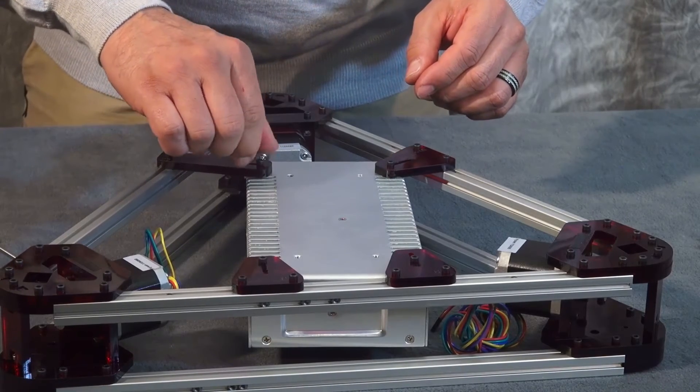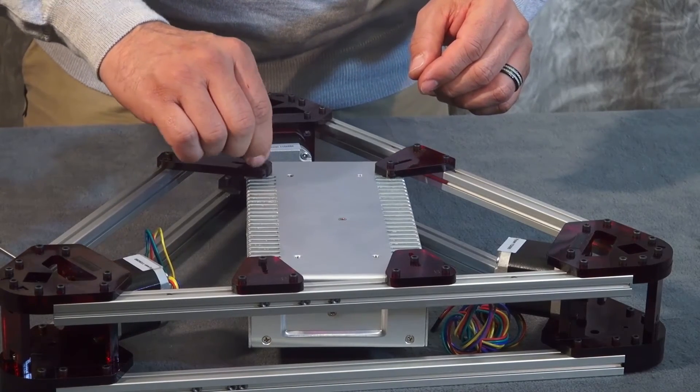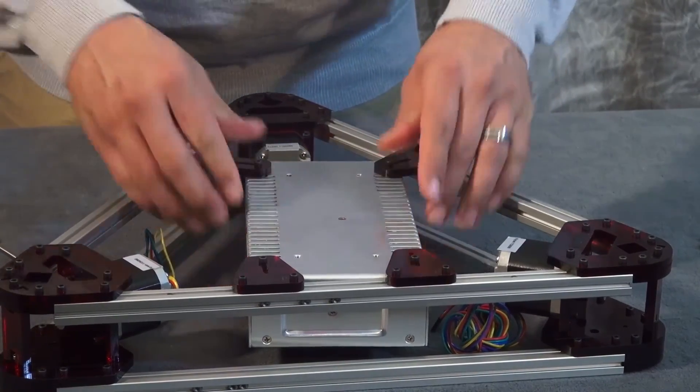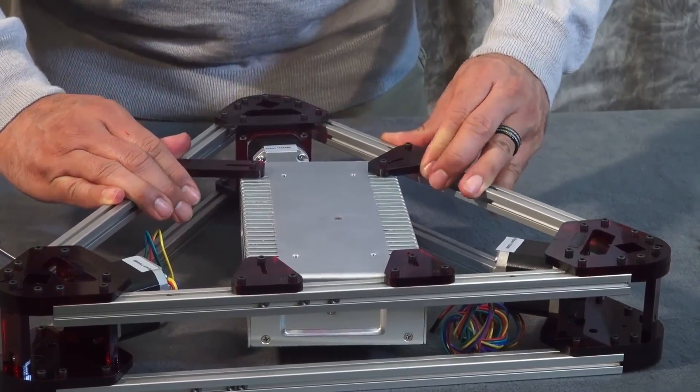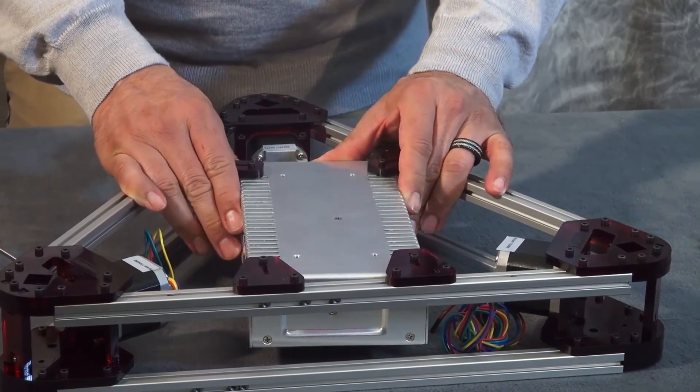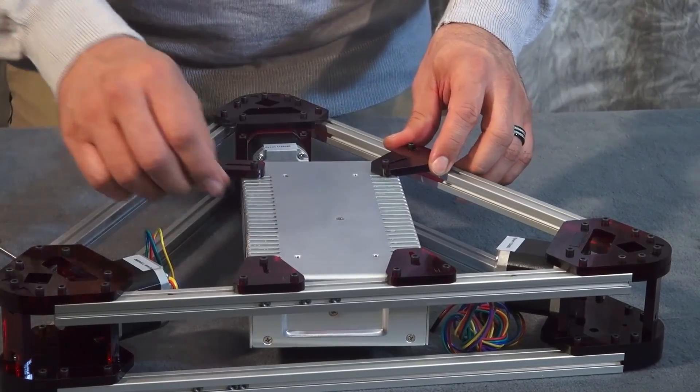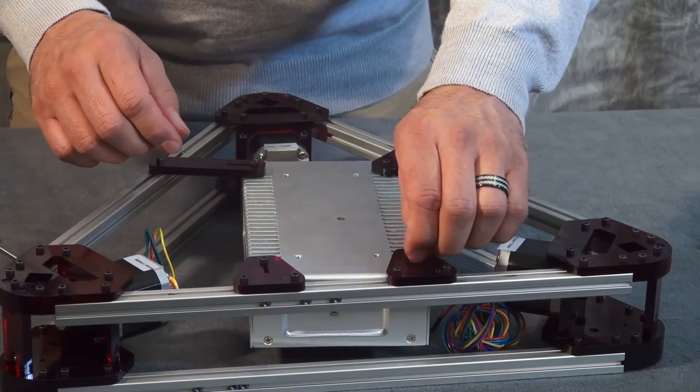Now you want to leave these hand tightened, and the ones on the arms just loose enough where you can still move them around. So you can adjust those once you get the bed installed to the proper position that would work for you.